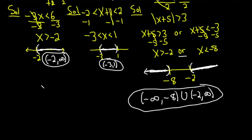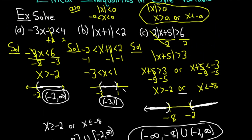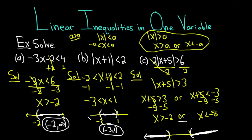And again, if you had something like x greater than or equal to negative 2, or x less than or equal to negative 8, it would be exactly the same except you would have negative infinity to negative 8 bracket, union bracket negative 2 to infinity — brackets because of the equal to. That's a lot of examples, so hopefully you learned some mathematics. If you enjoyed this video, make sure to check out more videos on Chegg. Until next time, good luck.